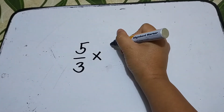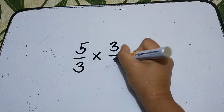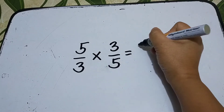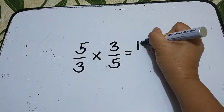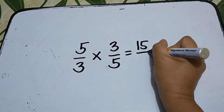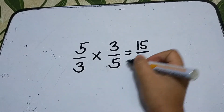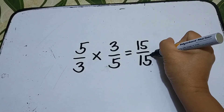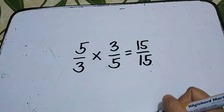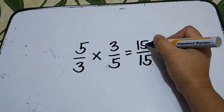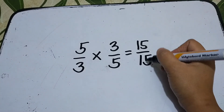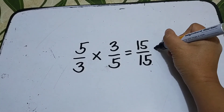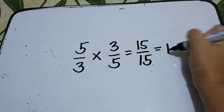5 times 3 is equal to 15, and 3 times 5 is equal to 15, so 15 over 15 — or 15 divided by 15 — is equal to 1.